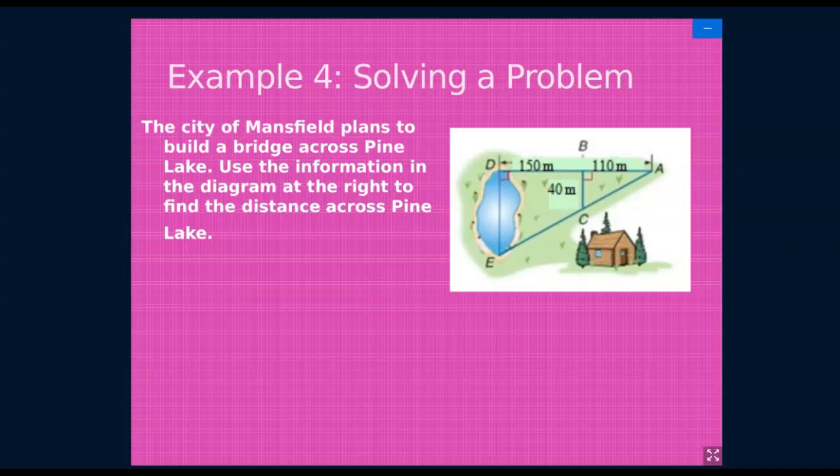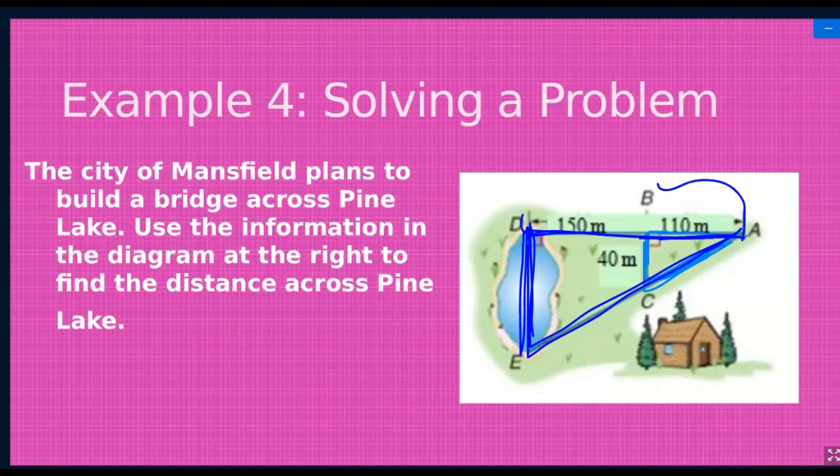The City of Mansfield plans to build a bridge across Pine Lake. Obviously they cannot measure the lake, so they use angles and diagrams to help them. We have triangle ABC, and we can use the smaller triangle ABC at the top to help us investigate the larger triangle. In order to look at the large triangle, we have to take line segment AB and line segment ED and add them together. So 150 and 110 is 260.